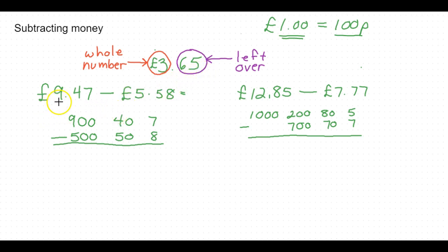So let's get to the subtractions. Suppose you've got the first question here: nine pound 47 subtract five pounds 58. As I've mentioned in a previous video, one of the easiest ways to work out this sort of thing is by breaking it down into the decomposition method.